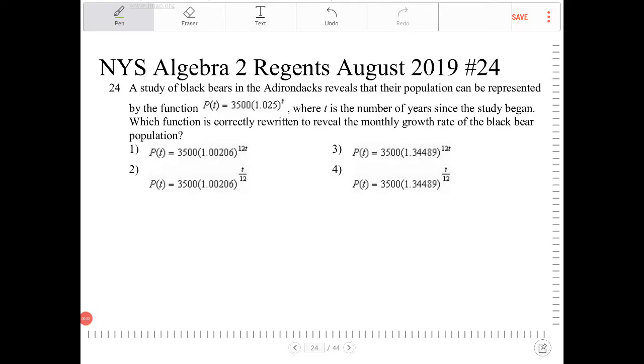The study of black bears in the Adirondacks reveals that their population can be represented by the function P(t) equals 3,500 times 1.025 to the t, where t is the number of years since the study began. Which function is correctly rewritten to reveal the monthly growth rate of the black bear population? So let's write down the equation here.